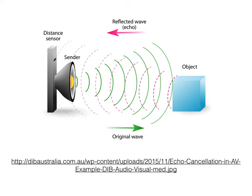Delay is a sound changing module that plays the sound source more than once at different times. The delay plays copies of the original sound source at later times. The classic delay effect sounds like an echo. We can use delay to create a sense of ambience, texture, and even rhythm. This simple effect is endless in variation.